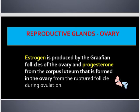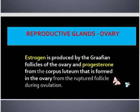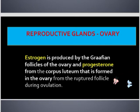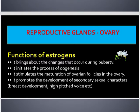Estrogen is produced by the Graafian follicles of the ovary, and progesterone is produced from the corpus luteum, which is formed in the ovary from the ruptured follicle during ovulation.